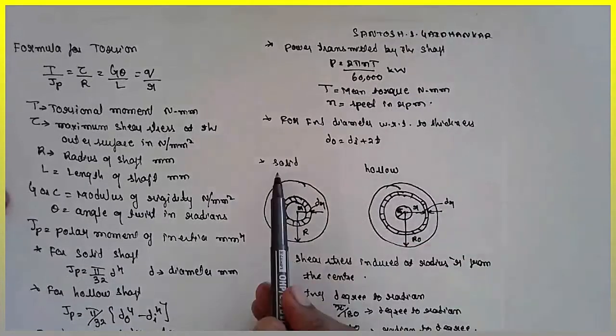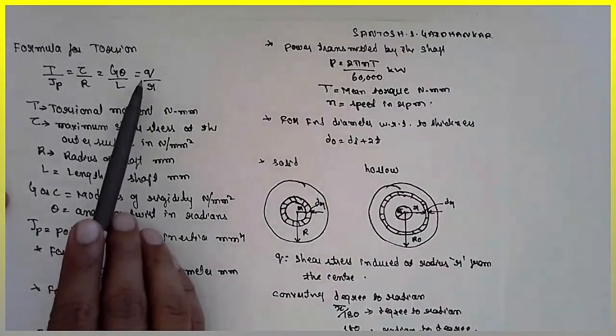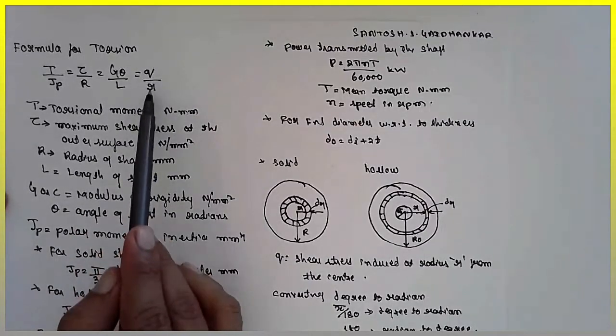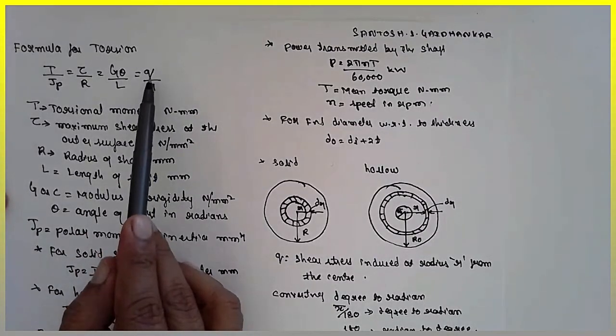This is the solid shaft, this is the hollow shaft diagram. Now one more extra term, q by r I have added here. The q indicates what?